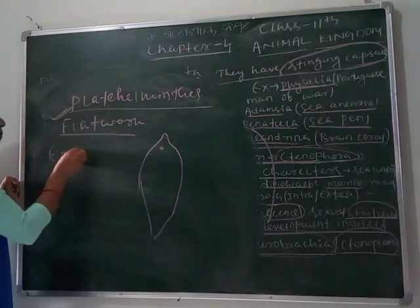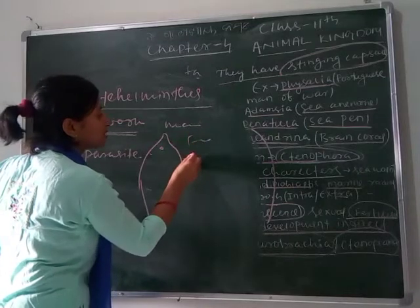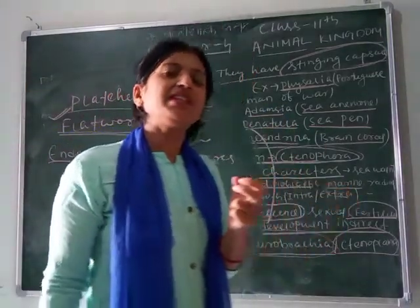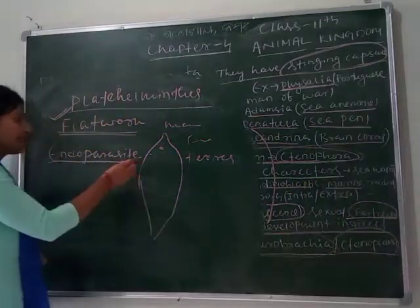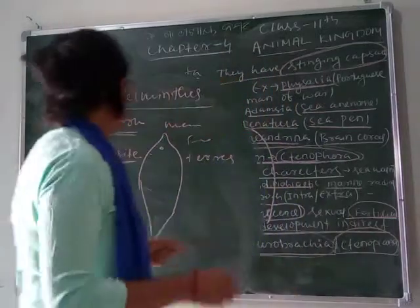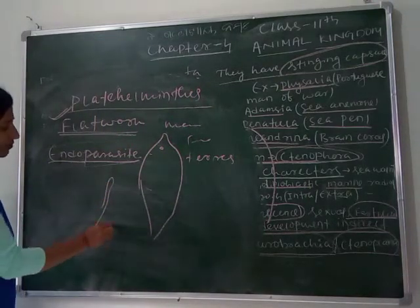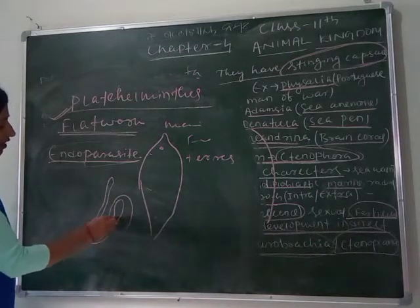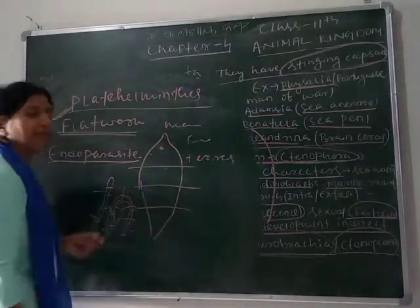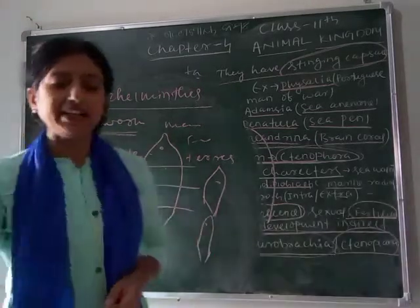Species of Platyhelminthes may be marine, freshwater, or terrestrial; some are endoparasites living inside the bodies of animals, plants, and humans. As parasites, they bear suckers for nutrition. They have high regenerating capacity — for example, tapeworm or planaria, when cut into many pieces, each piece can regenerate a complete organism.